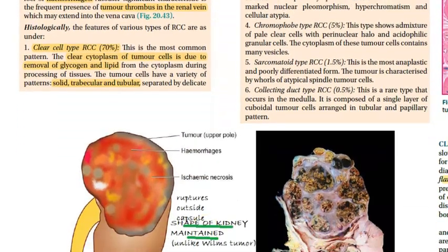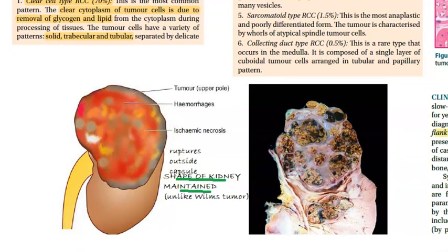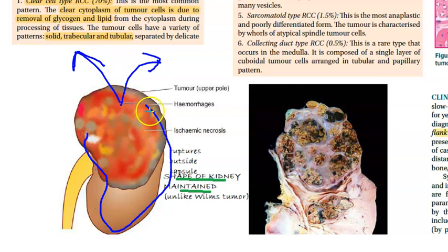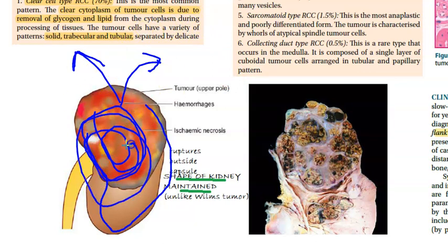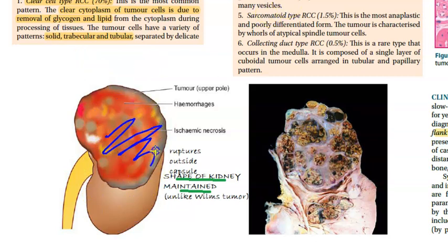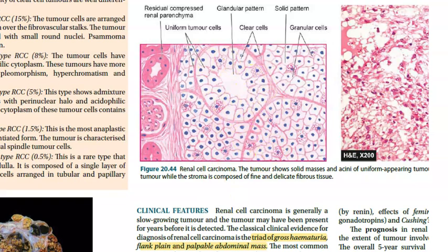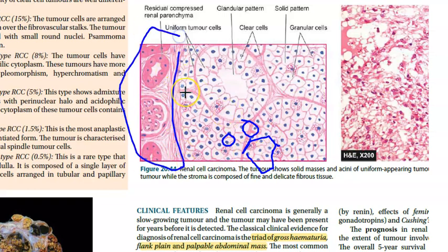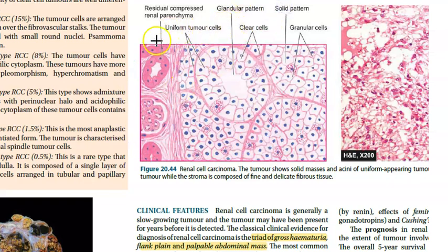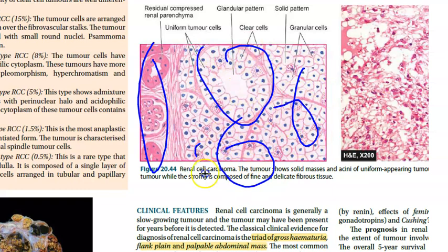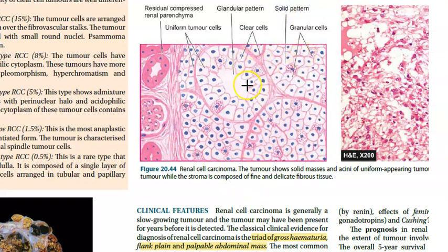Grossly, renal cell carcinoma mostly affects the upper pole of the kidney. The tumor is yellow due to lipid content. The renal shape is largely maintained even as the tumor ruptures out of its capsule. It is typically a solitary, unilateral tumor. On cut section, there is hemorrhage and ischemic necrosis. Microscopically, the clear cell type shows cells devoid of glycogen and lipids, with clear cytoplasm and circular nuclei - polygonal cells with a solid pattern.